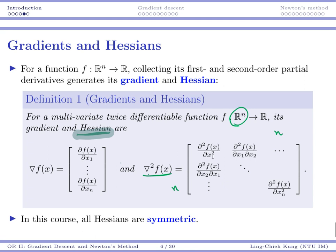So in this course, somehow we have a property showing that all the Hessian matrix would be symmetric. So it doesn't matter whether you do x1 first or x2 first. So we won't prove to you that this is true, but anyway, this is true in our lecture.